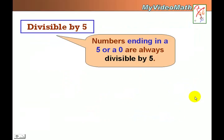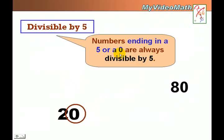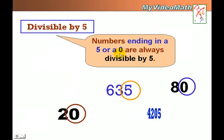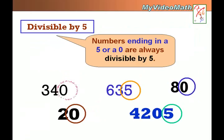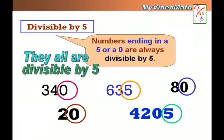Divisible by 5. If a number ends in a 5 or a 0, it is always divisible by 5. All these numbers shown are divisible by 5.